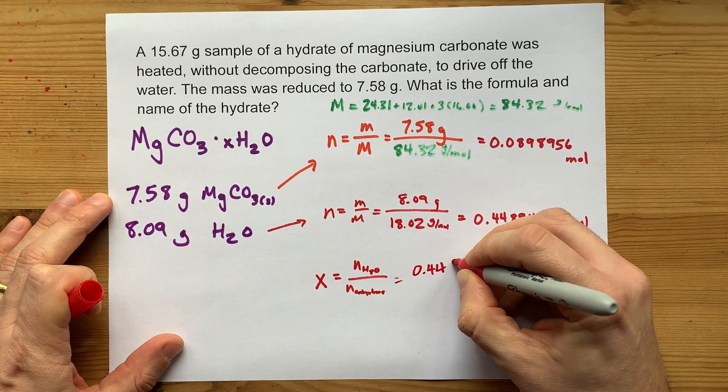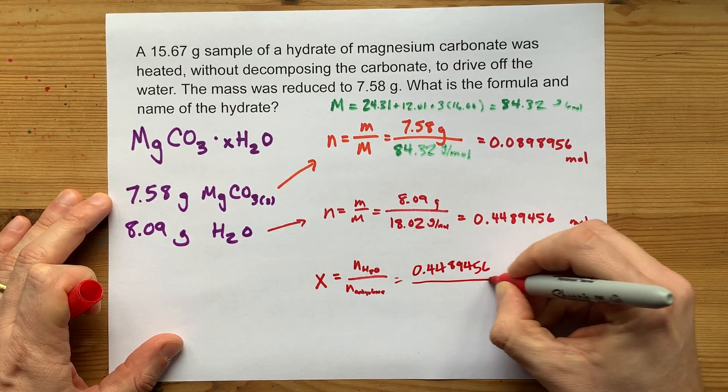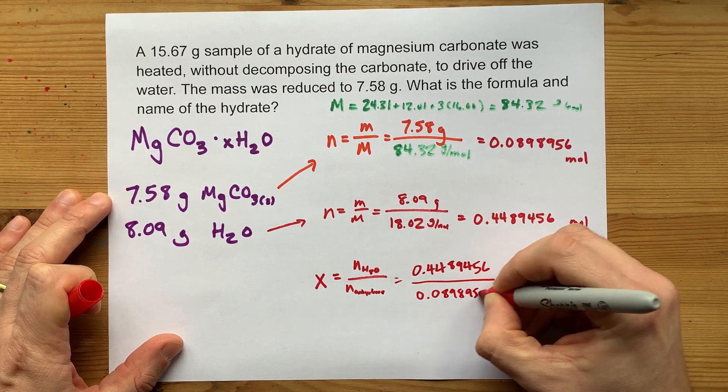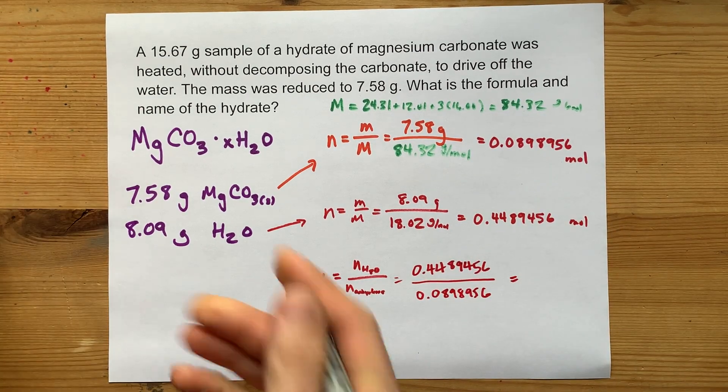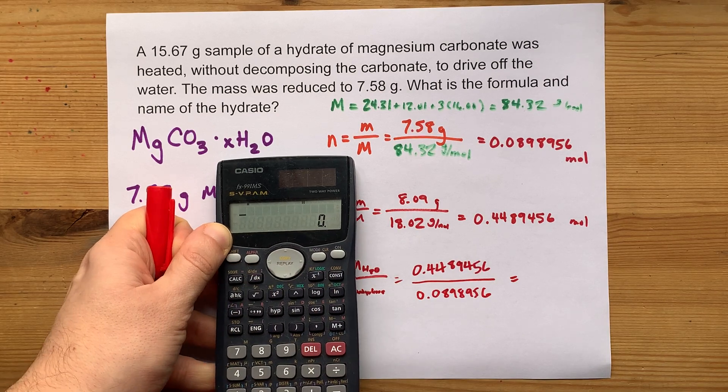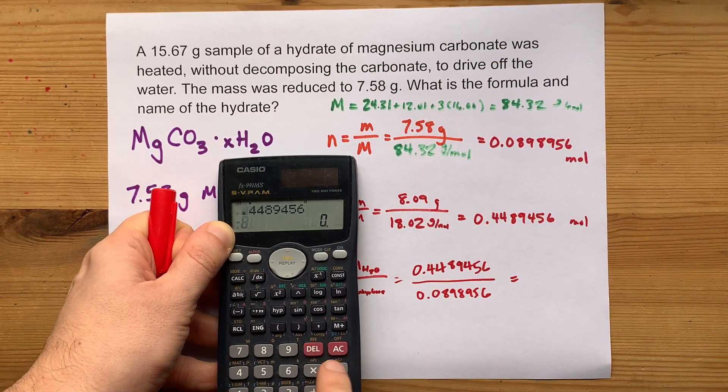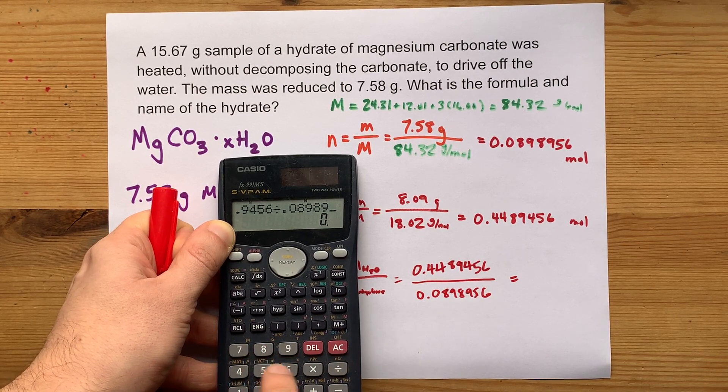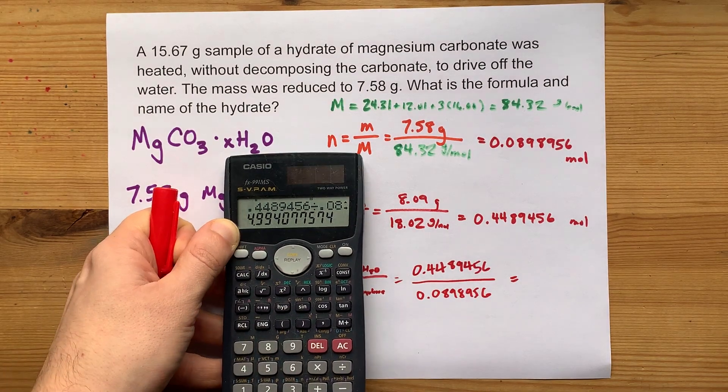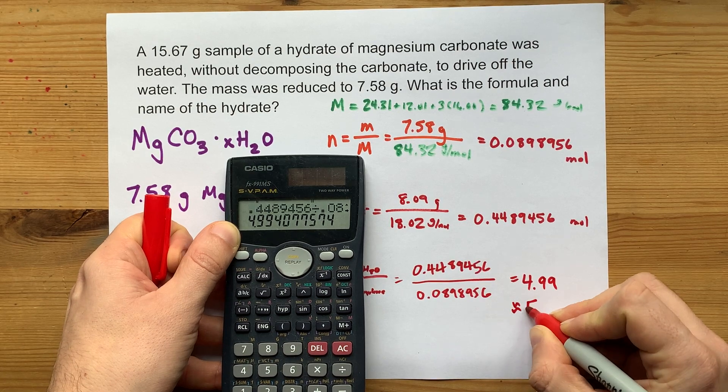I got 0.4489456. And I'm going to divide that by 0.0898956. This, when I do it on the calculator, should give me a whole number. Although 0.5s are allowed as well. I've seen those, but they're rare. 0.0898956. Here on my calculator, I'm getting 4.99. Now I'm going to write that down. But what your teacher wants to see is that it's approximately 5.